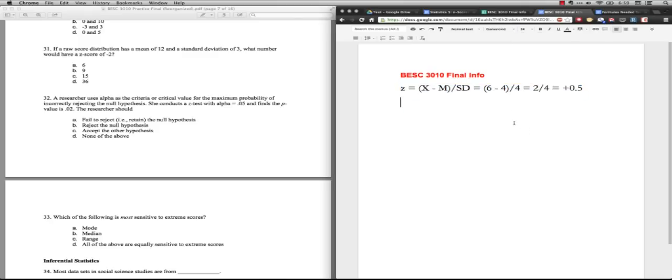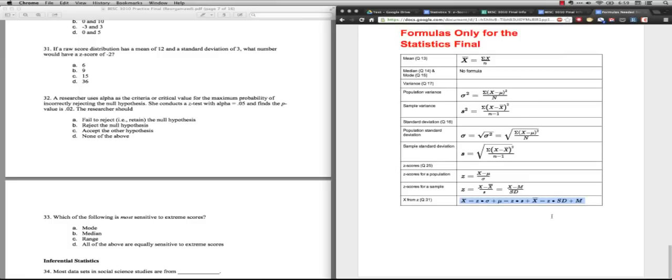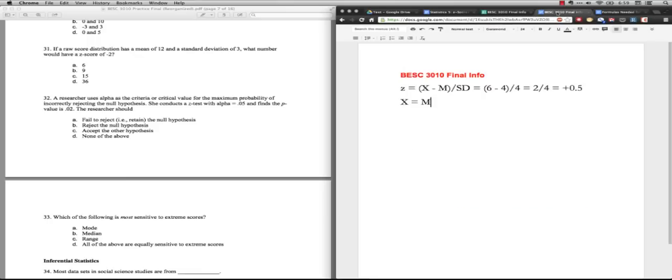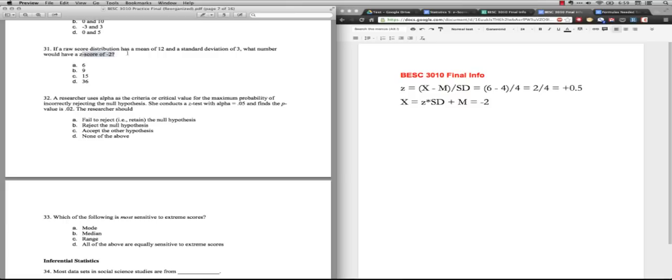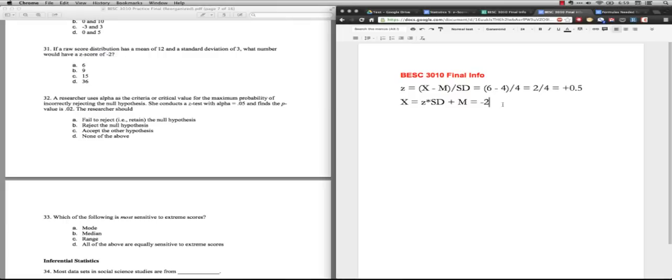So now I want an x-score and that's going to be equal to Z times the standard deviation plus the mean. In this case, the z-score is negative two. The standard deviation is three and the mean is 12.